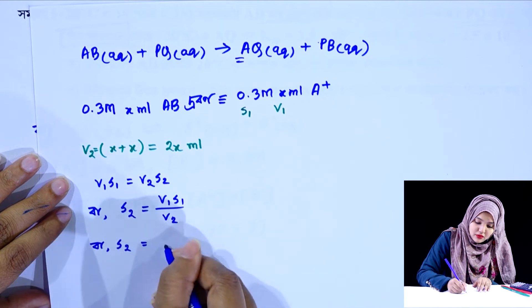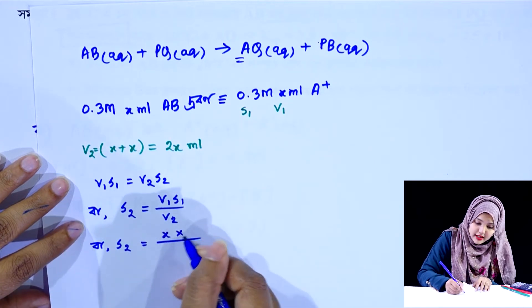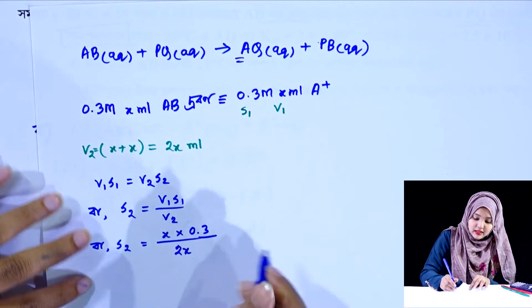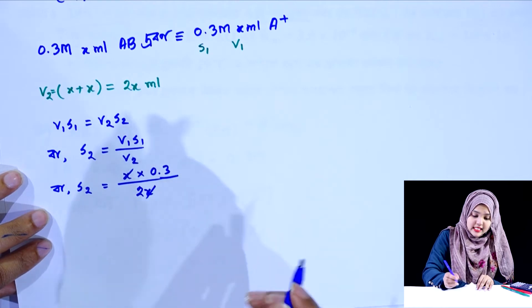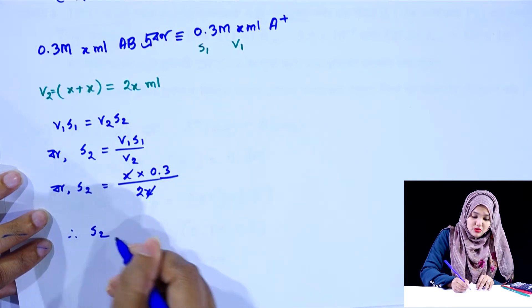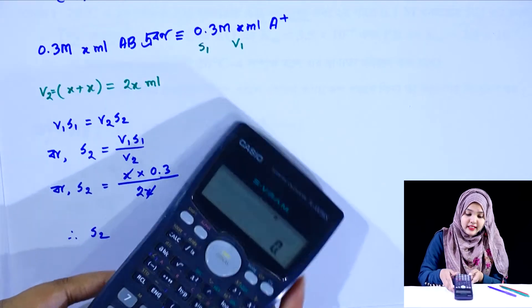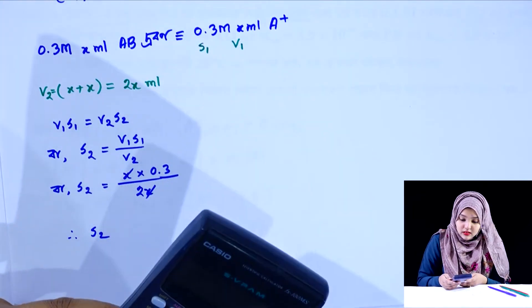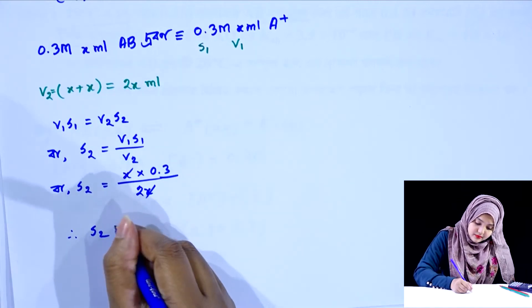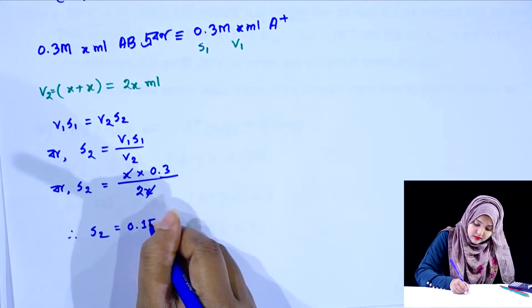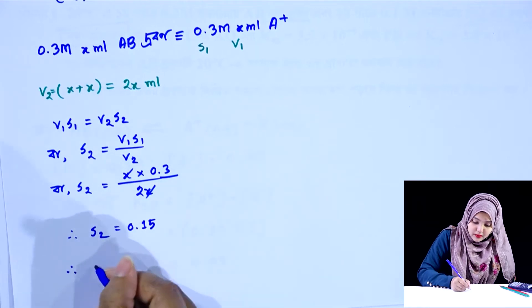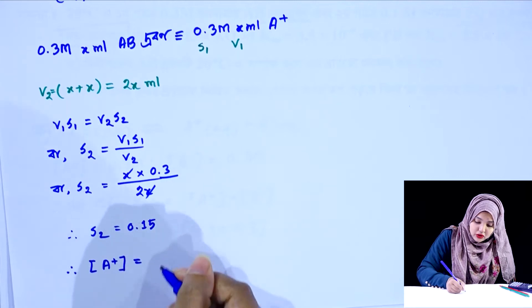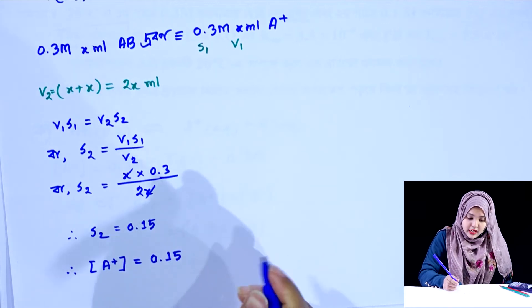আমরা equation দিয়েছি: 2x, তাহলে x কিন্তু কাটাকাটি যাবে। s² = কীভাবে হবে? 0.3 ÷ 2 = 0.15। তাহলে s = 0.15 মোলার ঘণমাত্রা পাওয়া যায়।